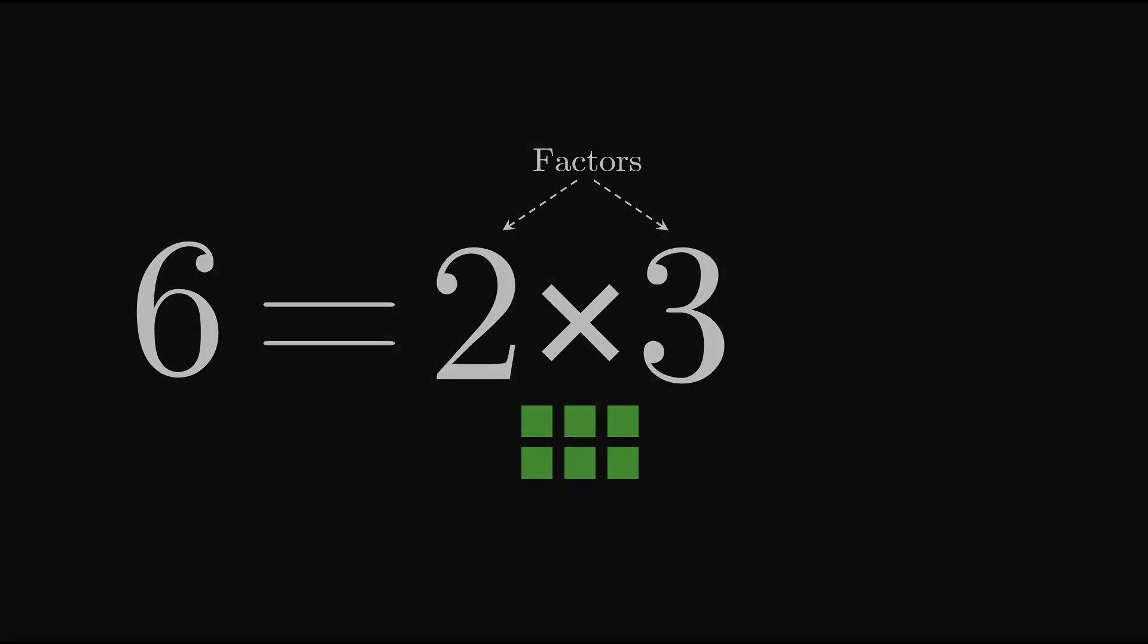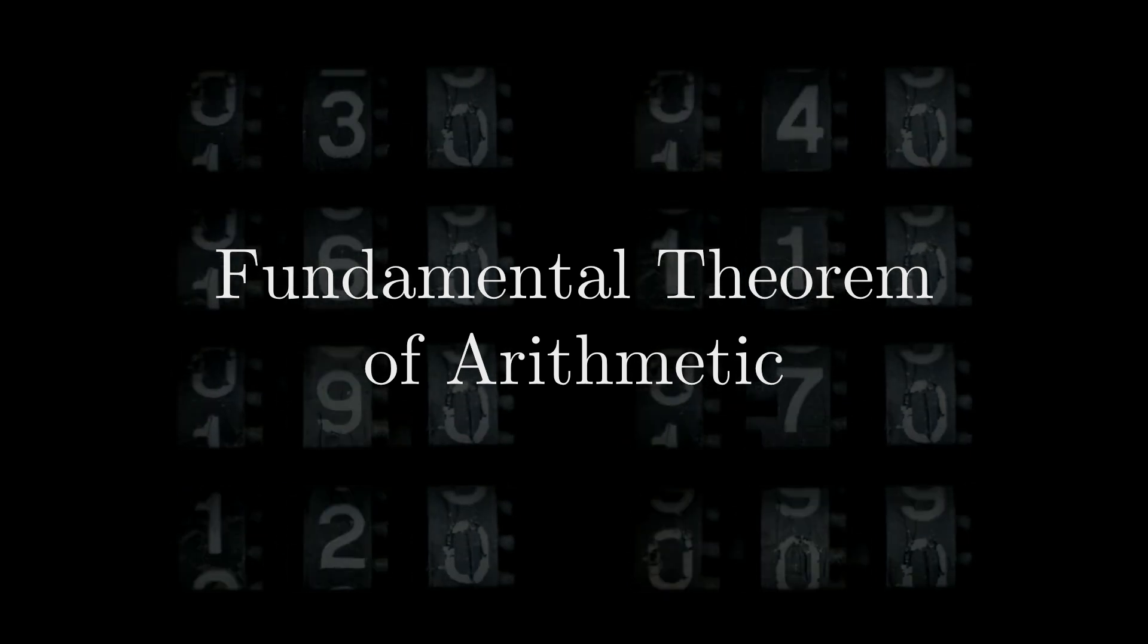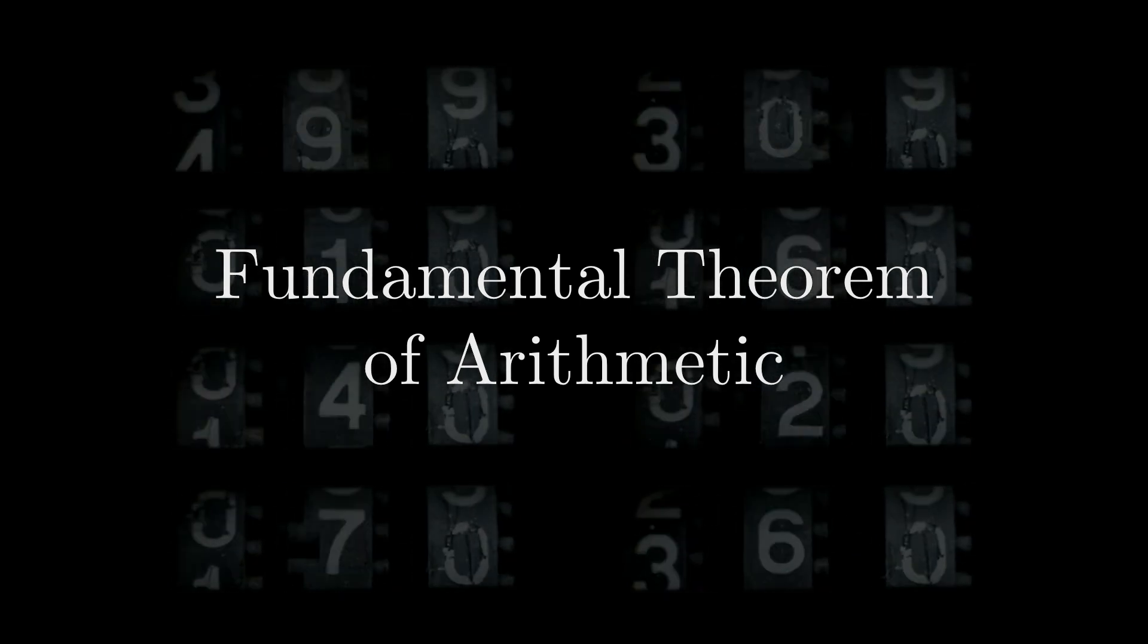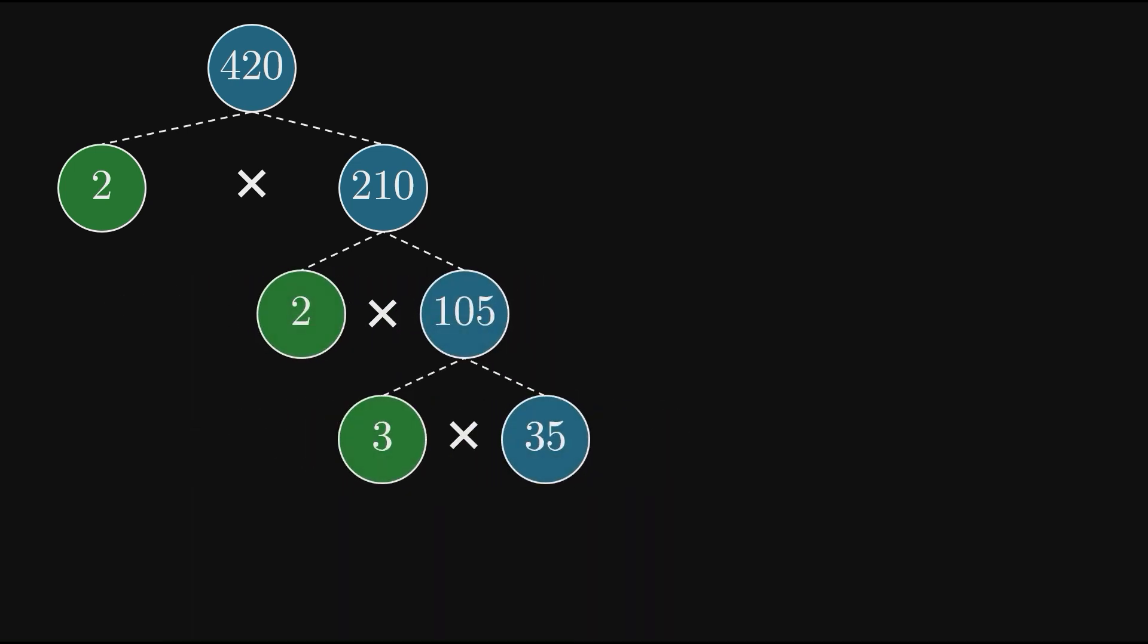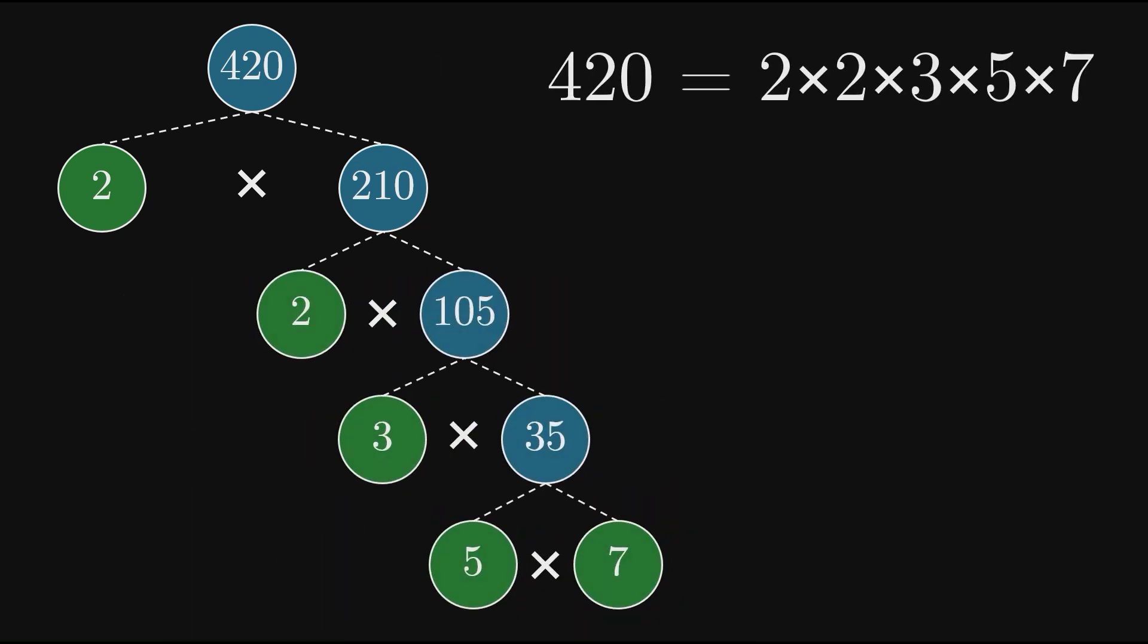As an interesting side note, the fundamental theorem of arithmetic tells us that every whole number greater than 1 can be factored into prime numbers in only one way. For example, the only prime factorization of 420 consists of a pair of 2's, a 3, a 5, and a 7. And there's no other way to do it.